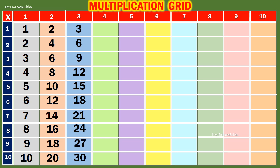Table of 4. 4 1s are 4. 4 2s are 8. 4 3s are 12. 4 4s are 16. 4 5s are 20. 4 6s are 24.